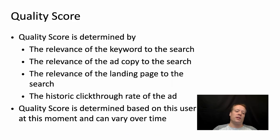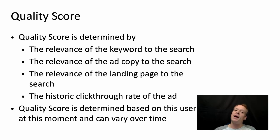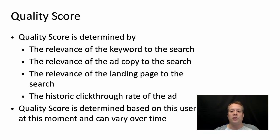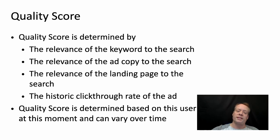That all assumes quality scores are equal. So what determines the quality score? It's determined by a few things: the relevance of the keyword to the search — how relevant is the word you bid on to what the user typed; the relevance of the ad copy to the search — Google looks at the text you wrote and sees how similar it is; the relevance of the landing page to the search; and the historical click-through rate on the ad. If people aren't clicking, Google will downgrade it. The quality score is also determined based on the user at that moment and can vary over time — a different user at a different time might receive a different quality score for the same ad.